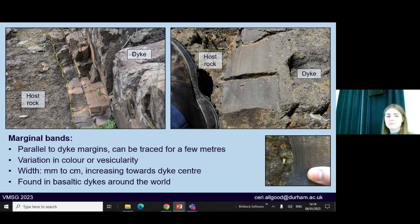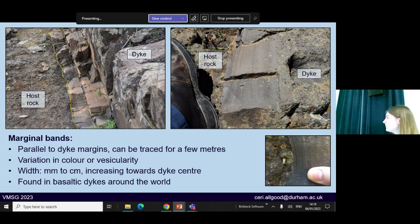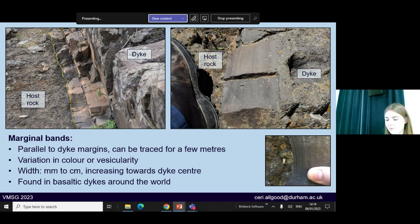They're picked out by a variation in colour, or sometimes they'll have weathered to form ridges, and more often than not you'll also see a systematic variation in vesicularity moving inwards. They're a few millimetres to a few centimetres wide and they increase in width towards the dike centre and become less distinct. They were quite common in the field area — probably in about half the dikes that we studied — but they're also found in basaltic dikes around the world. There are lots of reports in the literature of very similar features, which seems to imply that there's some underlying physical process driving their formation.